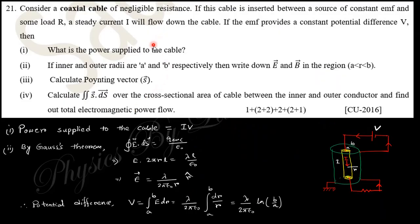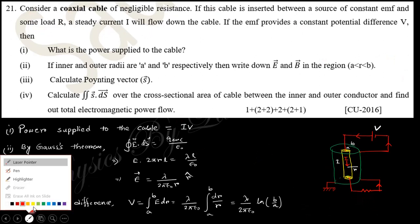Consider a coaxial cable of negligible resistance. This cable is inserted between a voltage source of constant EMF and a load resistance R. This resistance is R, and there is a steady current I flowing.